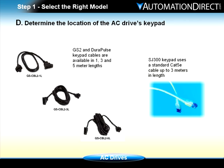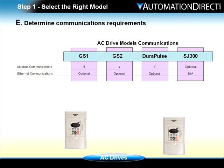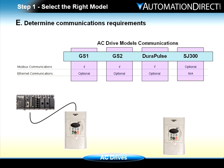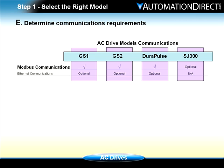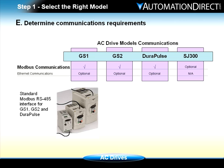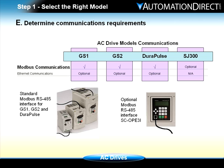A standard UTP Category 5 Ethernet cable up to three meters in length can be used for the SJ300 keypad. A serial communications interface can be used to connect the AC drive to other devices that function as a master. The master device can control the AC drive with the serial interface instead of using digital and analog I/O, and can also monitor status of various AC drive parameters such as speed, current, and fault status. The GS1, GS2, and DuraPulse AC drives have a standard Modbus RS-485 serial interface. The SJ300 requires an optional SC-OPE-3i with a built-in serial communications interface.